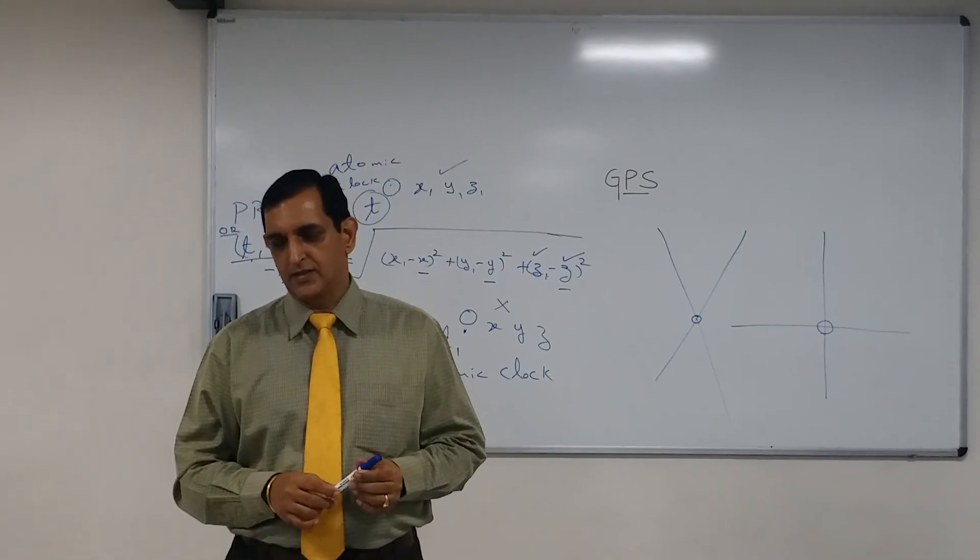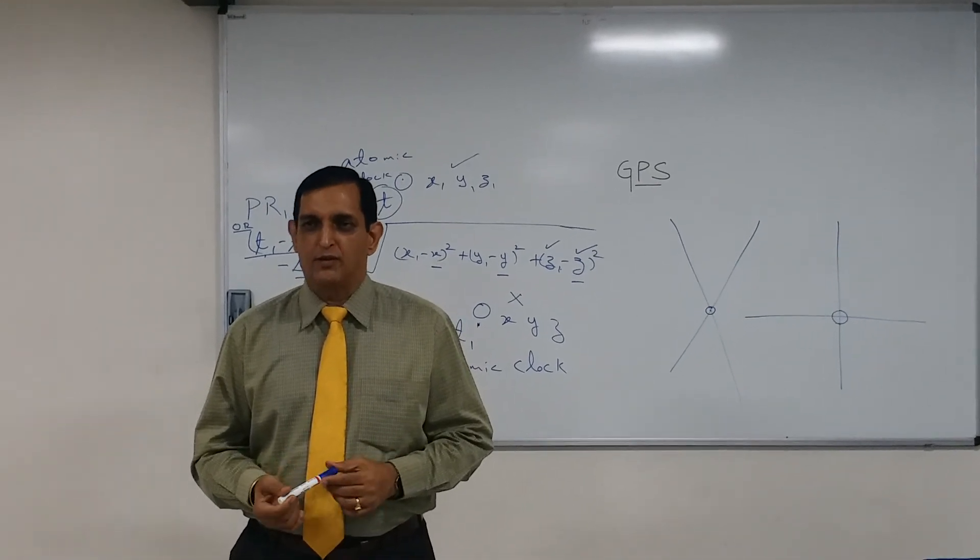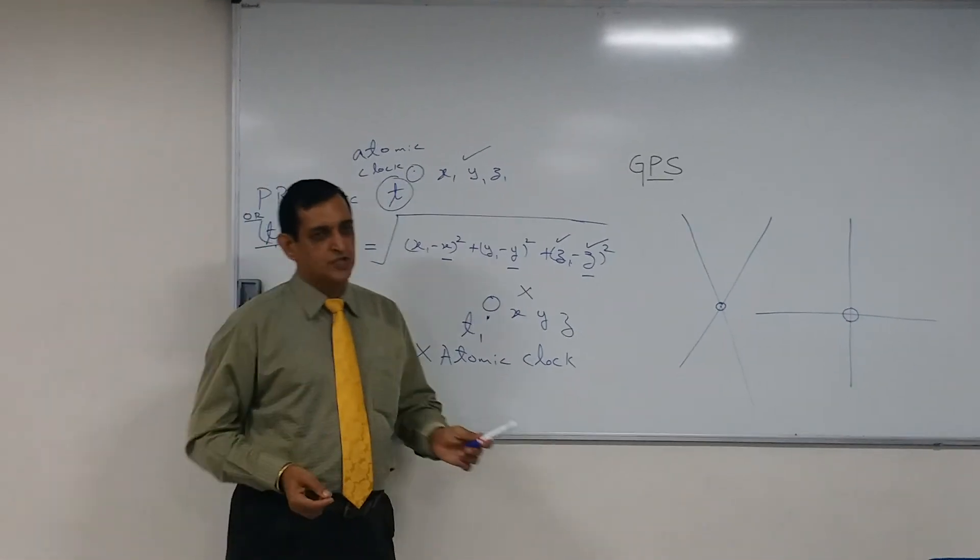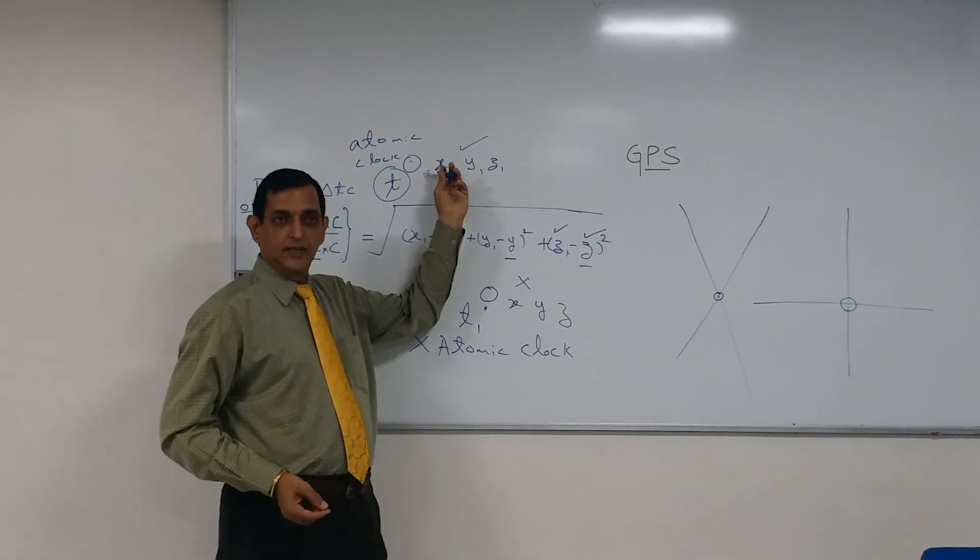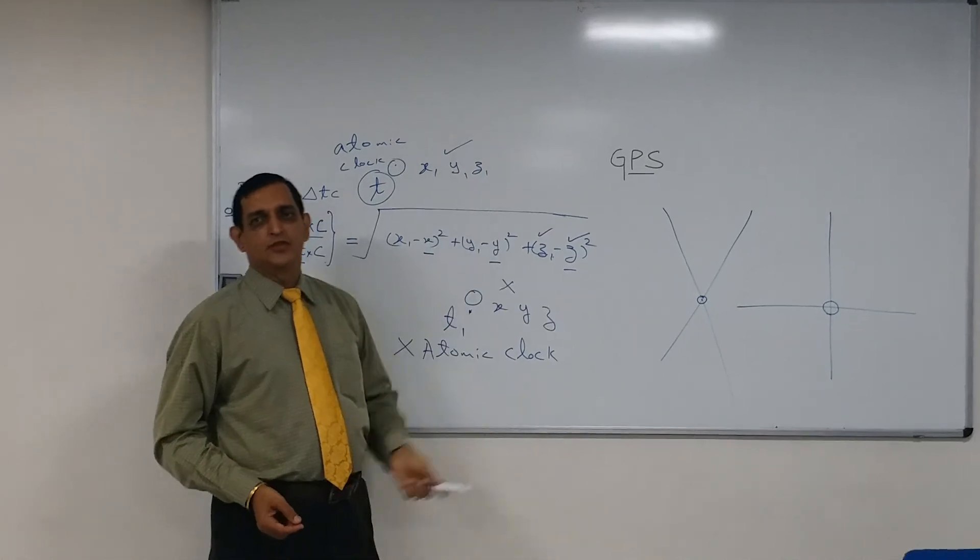The last one, deviation of satellite from the predicted path. Now, as I told you, the upload station gives the data to the satellite 3 times in 24 hours, that is the minimum.